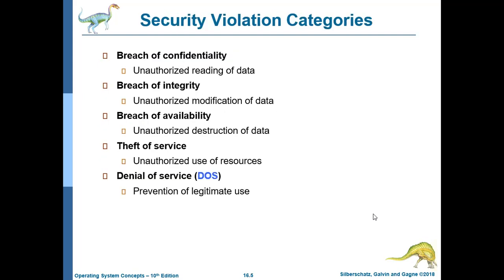We have security violation categories. Breach of confidentiality is unauthorized reading of data — for example, Chinese hackers exposed personal information from a Philippine government website in connection with the West Philippine Sea dispute, which is a breach of confidentiality. Breach of integrity is unauthorized modification of data, such as viruses that corrupt or hide your files.